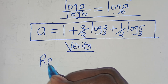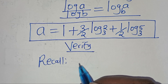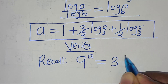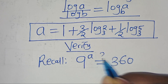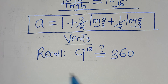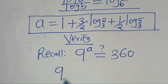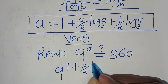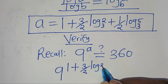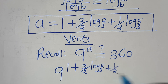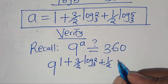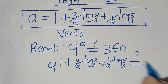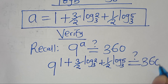So, if you recall, we have that 9 raised to the power of a is supposed to give us 360. So let's substitute the value of a, so we have 9 raised to the power of 1 plus 3 over 2 times log base 3 of 2, then plus log base 3 of 5. This is supposed to give us a value of 360.